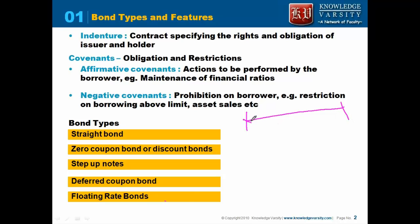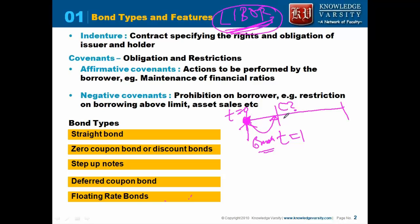In floating rate bonds, the coupon is decided in advance. Consider t equal to 0 — the coupon to be paid at t equal to 1 is decided at t equal to 0. If the coupon payment is done every 6 months, the coupon rate is decided at the beginning of that period.